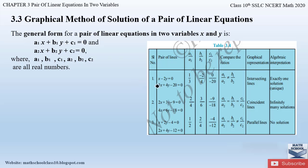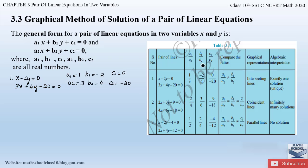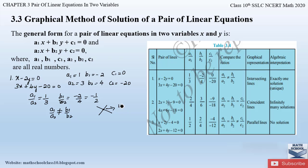From Example 1, the equations x minus 2y equals 0 and 3x plus 4y minus 20 equals 0 give: a1 = 1, b1 = −2, c1 = 0, and a2 = 3, b2 = 4, c2 = −20. The ratio a1/a2 equals 1/3 and b1/b2 equals −2/4 equals −1/2. Since a1/a2 is not equal to b1/b2, the two lines are intersecting, giving a unique solution.